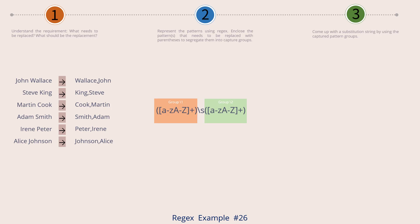So the a to z plus stands for a name formed with one or more English letters. I have enclosed this a to z plus within a set of parentheses. This pattern captures the first name and assigns a particular number to it: backslash 1.